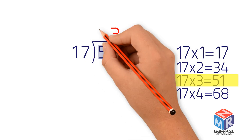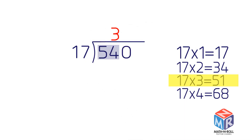Now multiply 17 by 3 to get 51. Place the product directly below the 54 and draw a line beneath it. Subtract 51 from 54 to get 3. After you subtract, the result should be less than the divisor. In this problem the divisor is 17. 3 is less than 17, so it's okay.